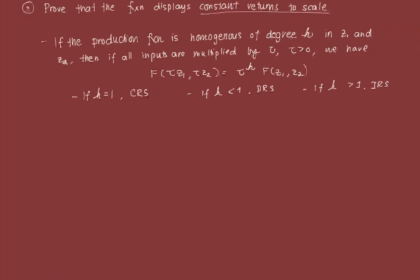To prove that the function displays constant returns to scale, we need to remember the idea of a homogeneous function. If the production function is homogeneous of degree H in Z1 and Z2, then if all inputs are multiplied by some positive constant tau, we can isolate tau in a specific form, and whatever the exponent of tau ends up being, that's the degree to which our function is homogeneous. That degree underlies which type of returns to scale the function has.